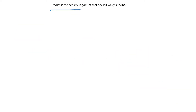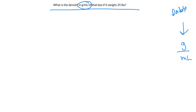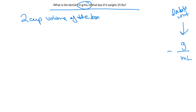Now I want to know: what is the density of the box in grams per mL if that box weighs 25 pounds? The first thing you do is write the unit you want on the right — this is my finish line. I want grams per mL. That diagonal line is the same as a horizontal line; it's a double unit, it's a fraction — one unit over another unit. The volume of that box is two cups, which we just calculated.